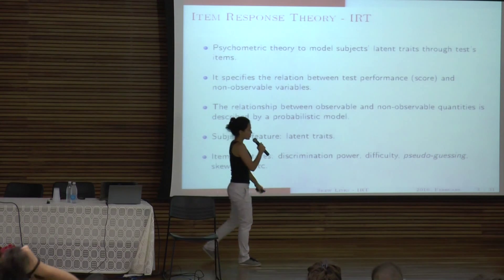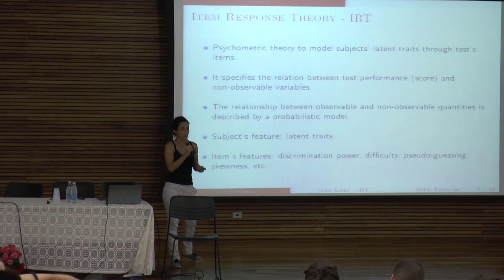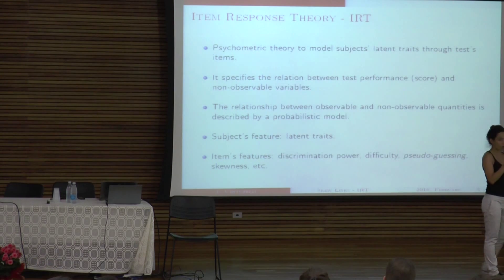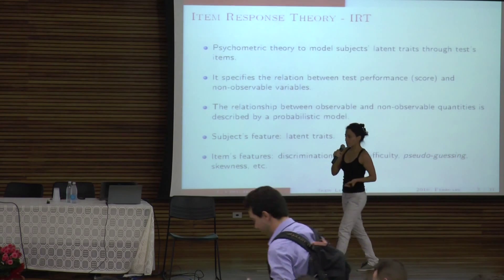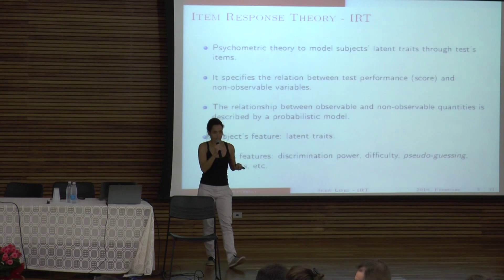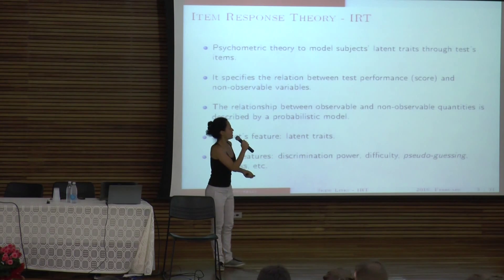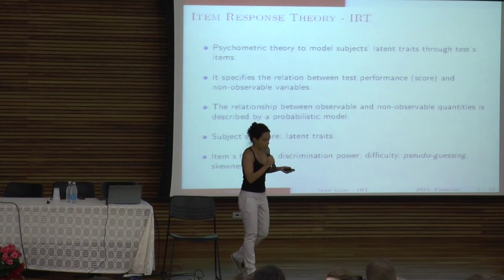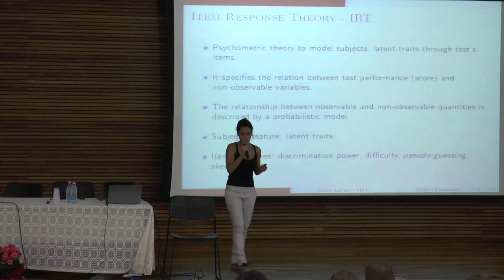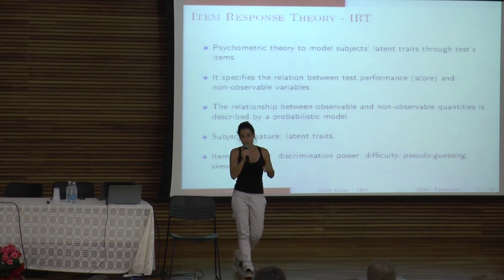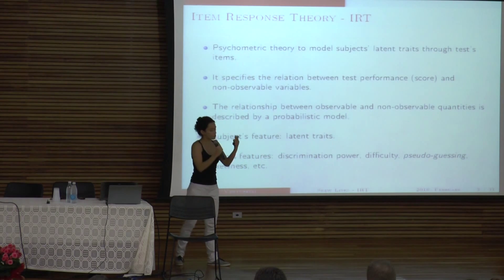So it's a psychometric theory and the goal is to measure variables that I cannot observe directly. For instance, if I want to measure how tall you are, I can just go there with a measure tape and I can directly measure that. However, when I am interested in variables like intelligence or depression or anxiety level, which mine would be really high right now, I would need something like IRT. So how we do that? We use items from a test to try to establish a relationship between a subject's performance on a test to these non-observable variables.